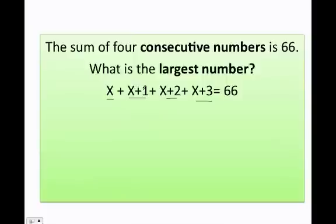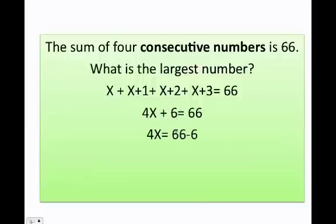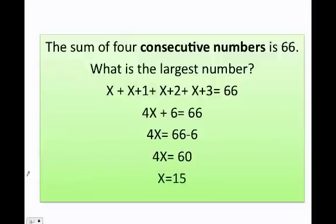Now we solve for x. We have four x's, and 1 plus 2 plus 3 equals 6, so we get 4x plus 6 equals 66. Passing the 6 to the other side: 66 minus 6 is 60. Dividing both sides by 4, we get x equals 15.